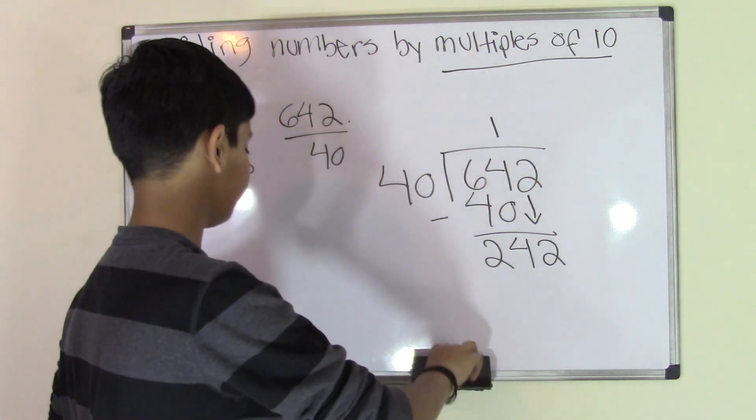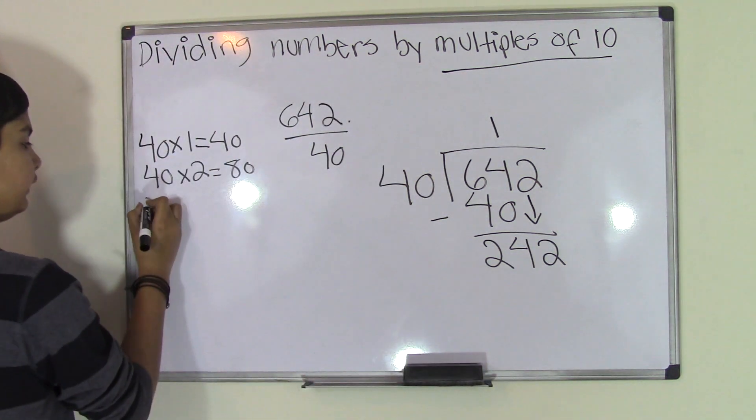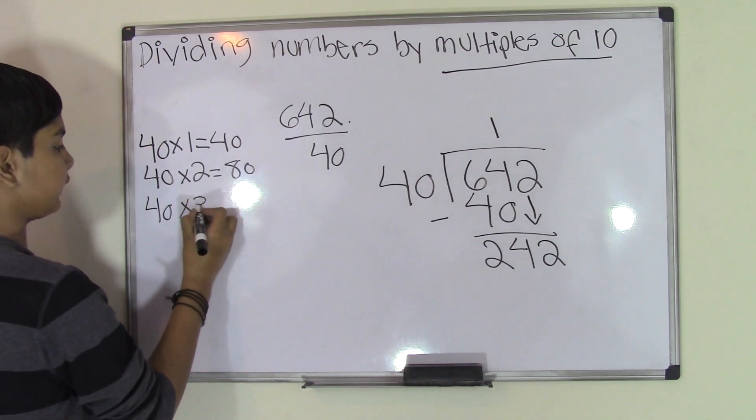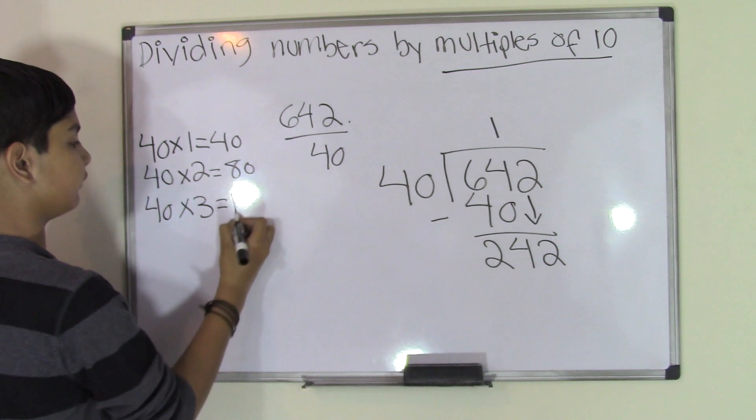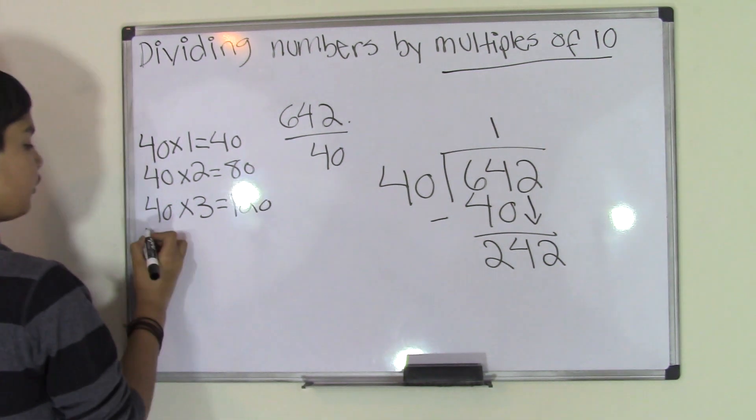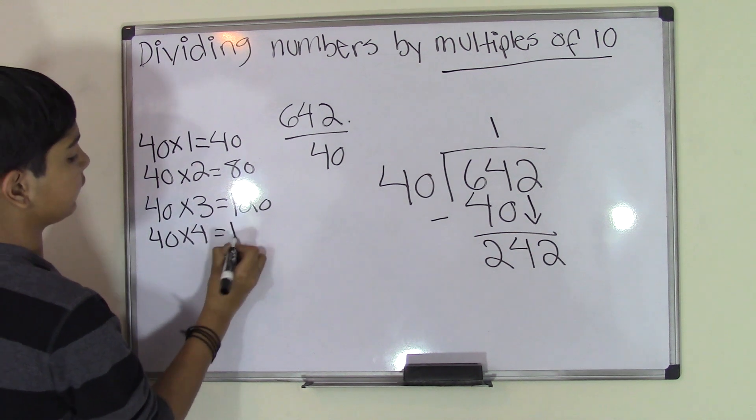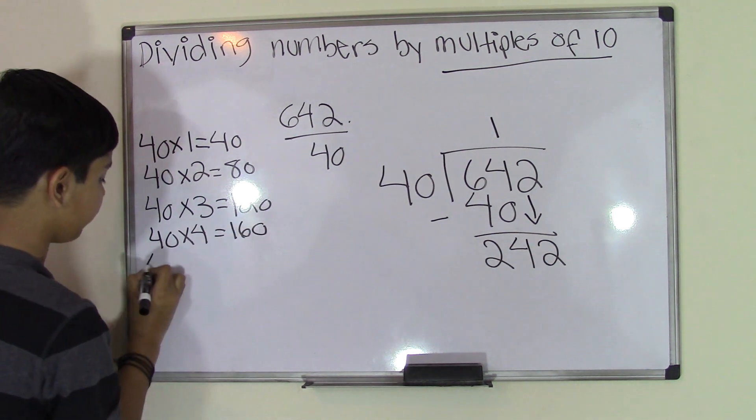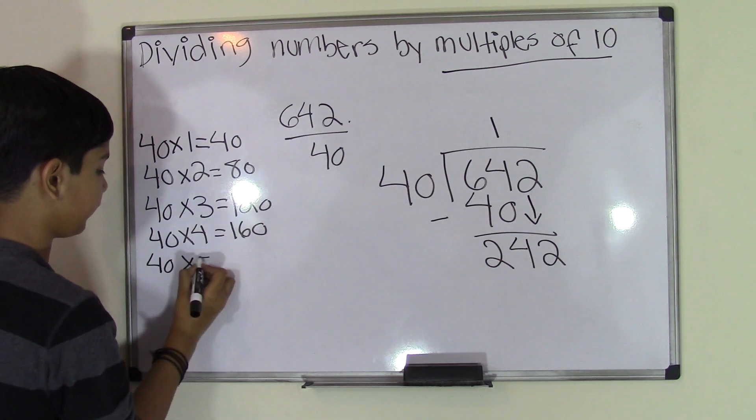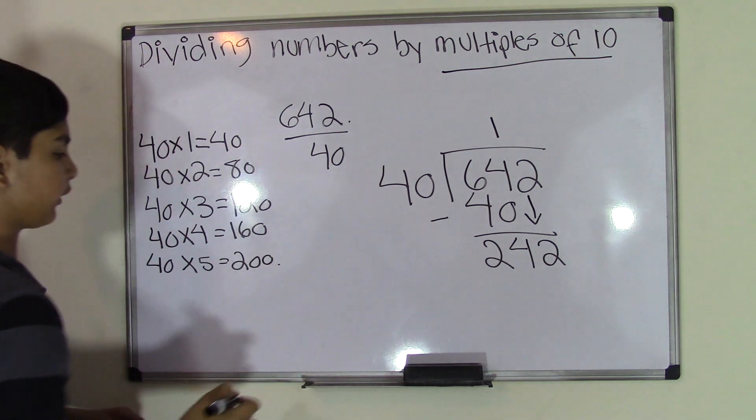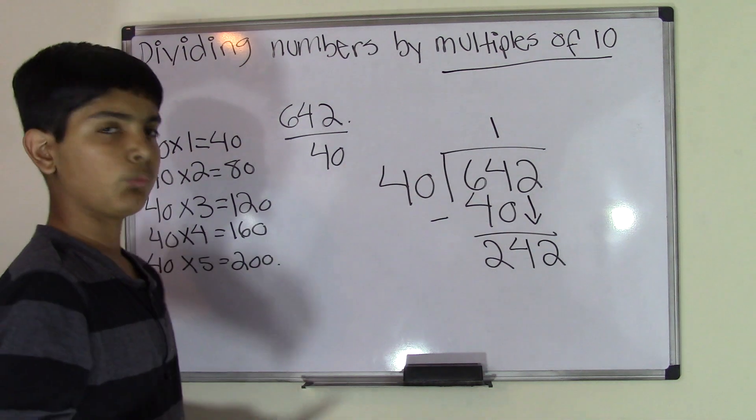242 obviously can be divided by 40 because it's greater than 40. So let's go on the times table and check if we get an answer closer to that. We know that 40 times 3 is 120, 40 times 4 is 160, 40 times 5 is 200.